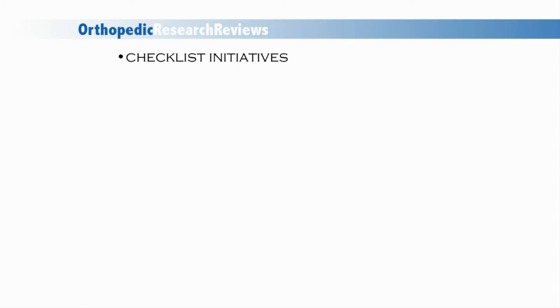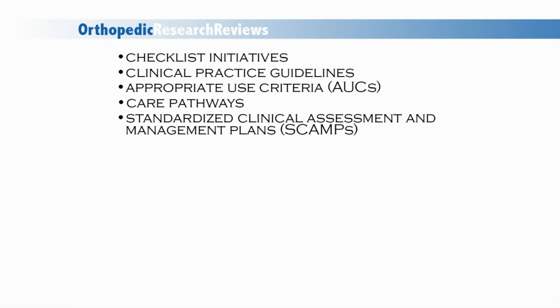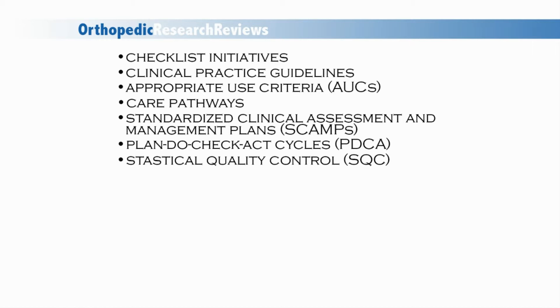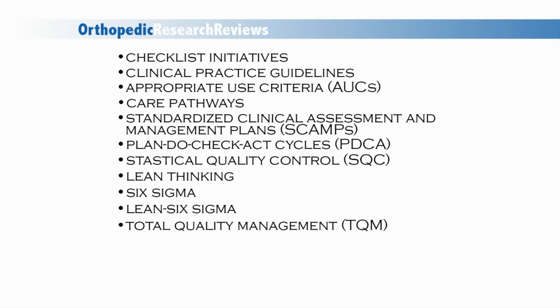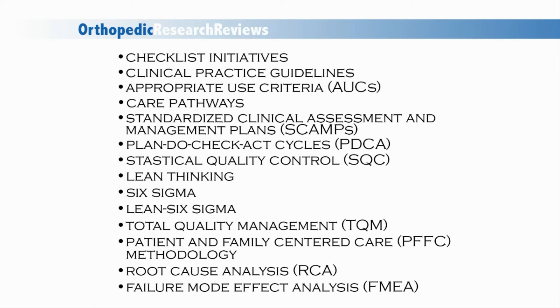The quality and process improvement tools outlined in this current concept review include checklist initiatives, clinical practice guidelines, appropriate use criteria, care pathways, standardized clinical assessment and management plans, plan-do-check-act cycles, statistical quality control, lean thinking, Six Sigma, Lean Six Sigma, total quality management, patient and family centered care methodology, root cause analysis, and failure mode effect analysis.